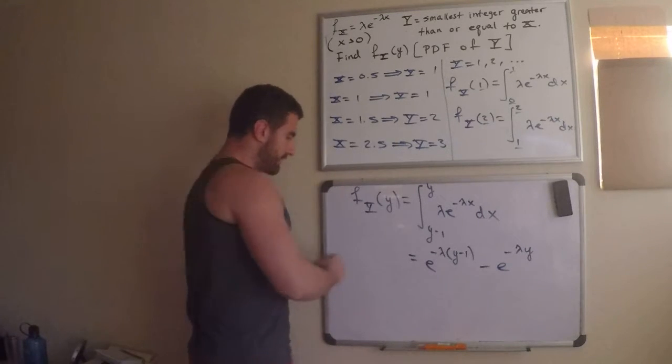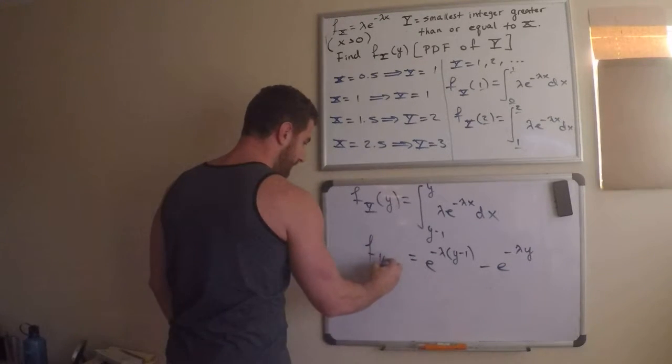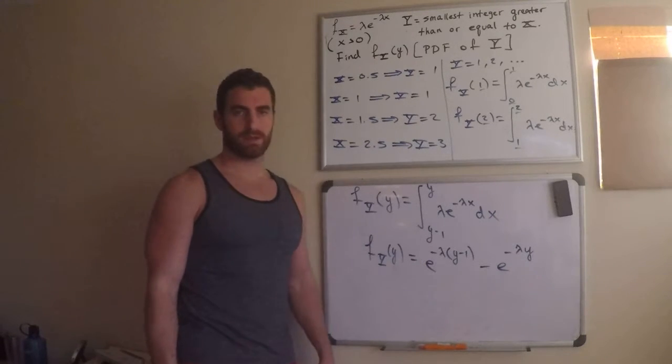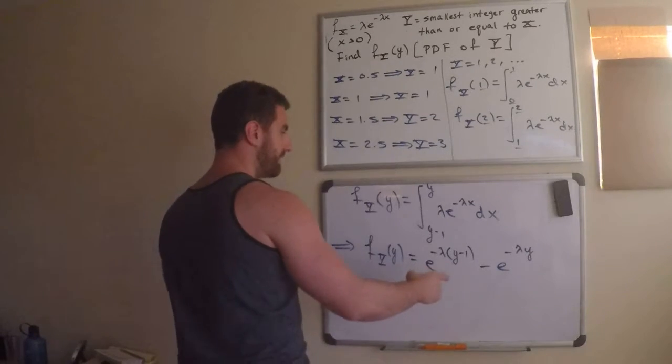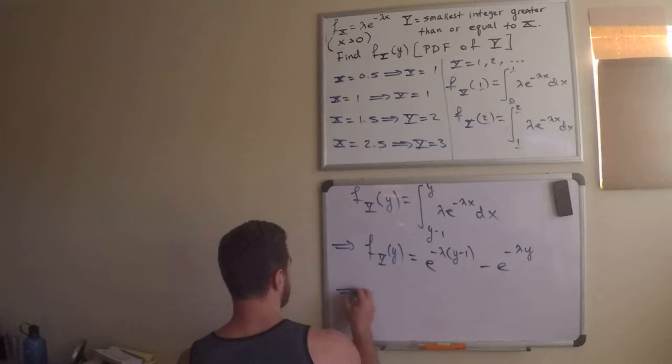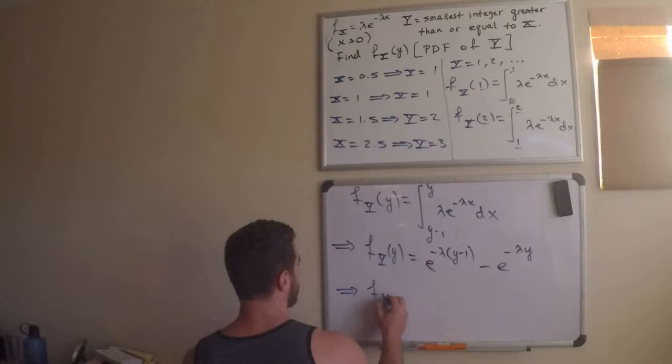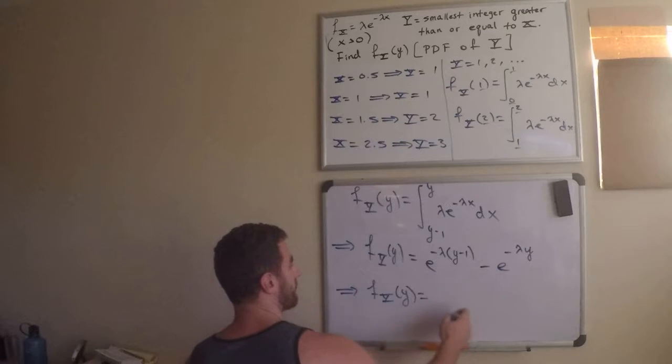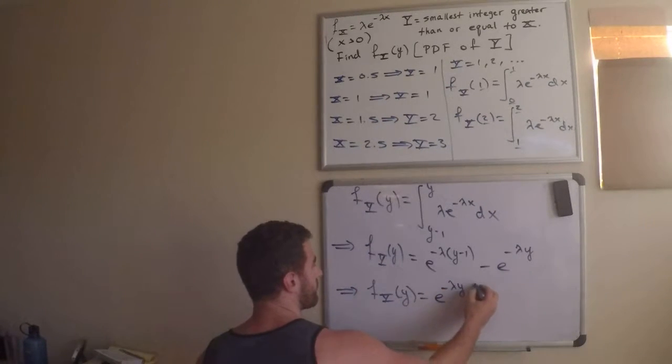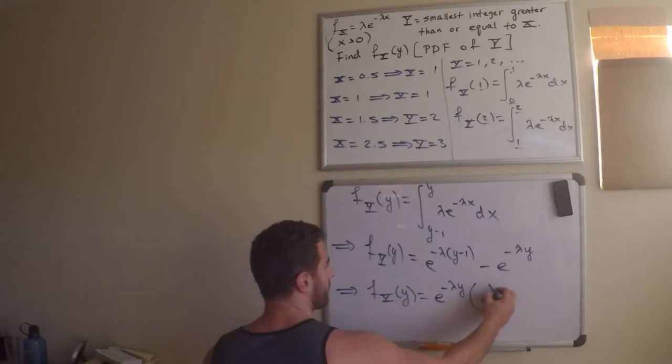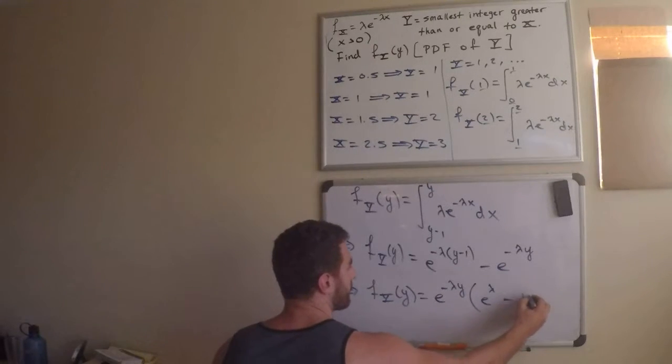We're pretty much there. I mean, technically... Technically, this is the PDF of y, but I'll write one other step. I can find the GCF. So, this is my PDF of y. It's going to be... The GCF is e to the negative lambda y. So, e to the negative lambda y. What's left over is e to the lambda minus 1.